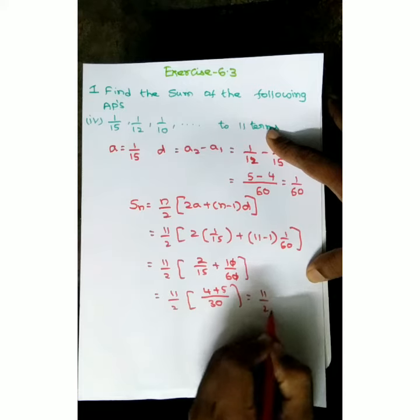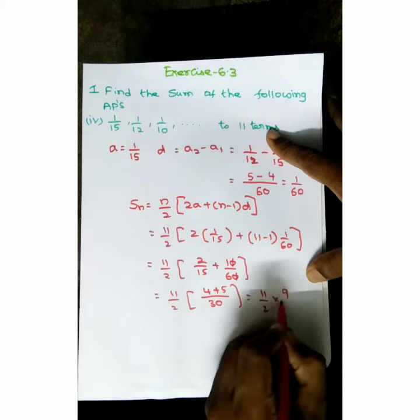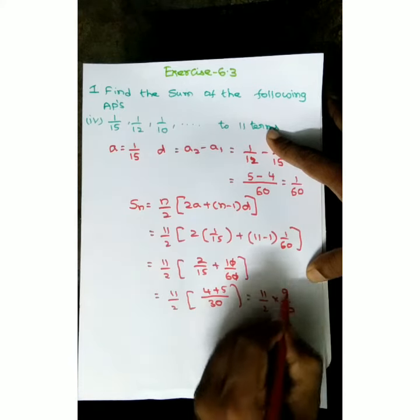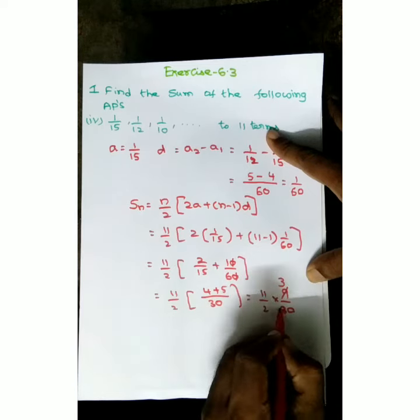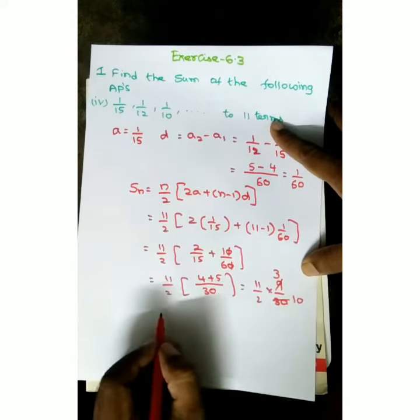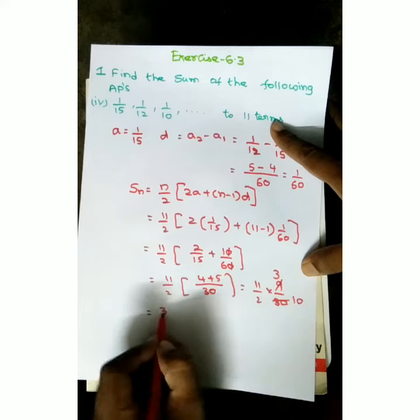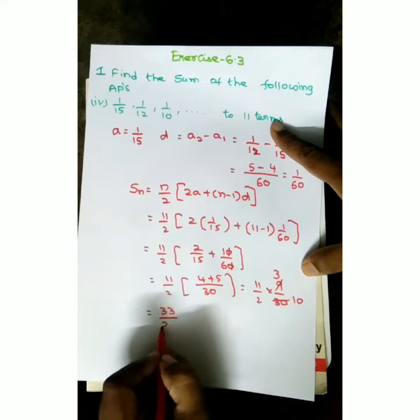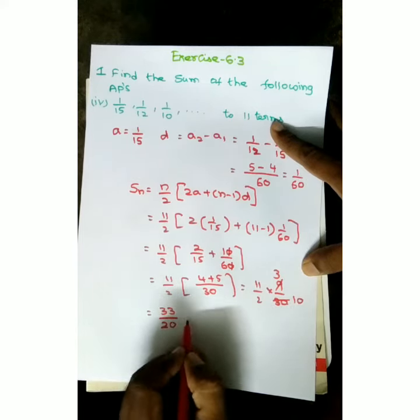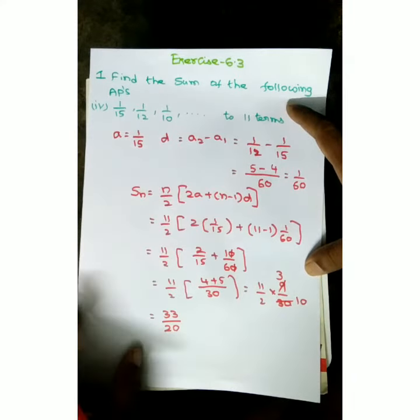11 by 2 into 9 by 30. Cancellation: 3 threes, 3 tens. 11 threes is 33 by 20. Sum to 11 terms is 33 by 20.